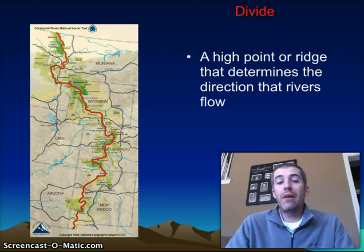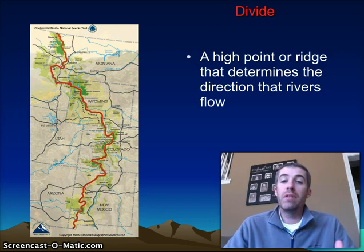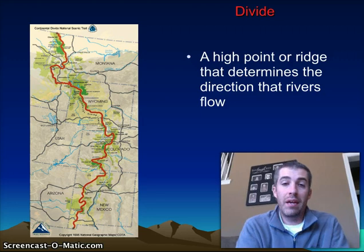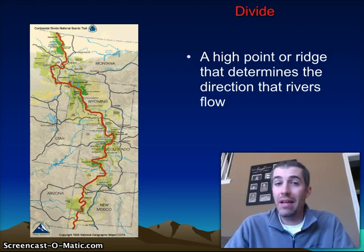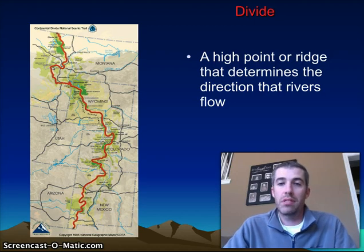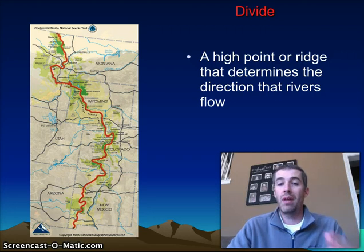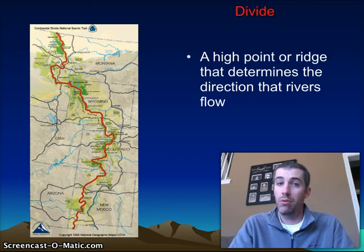Going down the middle of the country — meaning the high point of the United States and the high point of Canada — is a thing called a divide. There are several divides throughout the United States and Canada, with one really big one we're going to talk about. What is a divide? A divide is simply that high point or ridge that determines the direction that a river flows.